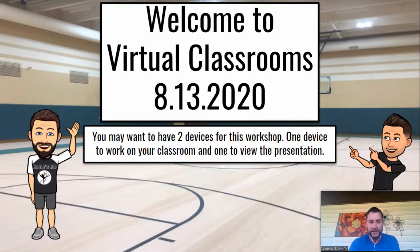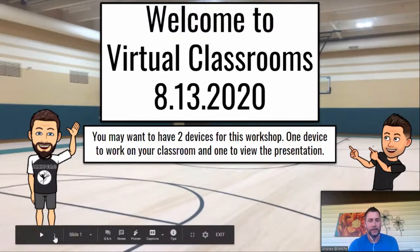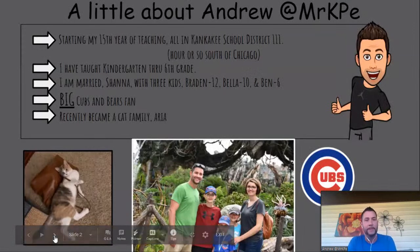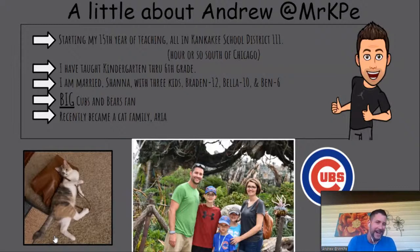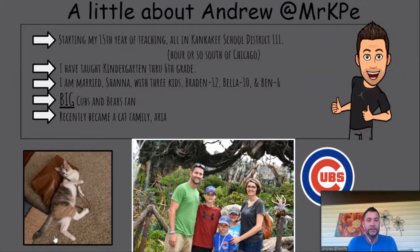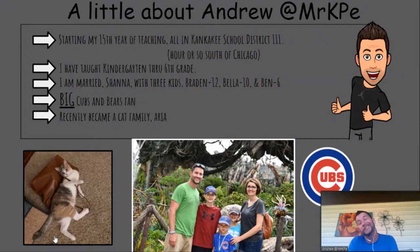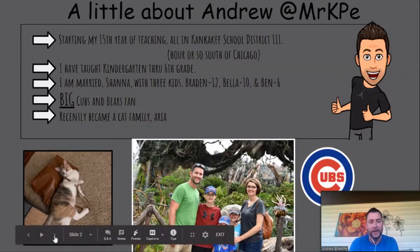So what we want to do first is a little get-to-know-you. A little about me: I'm starting my fifth year of teaching, all in the Campus Community District 111, about an hour south of Chicago, right on Route 57. I've taught kindergarten and sixth grade. I'm married to Shauna with three kids — Brady's 12, Bella's 10, Ben is six. I'm a huge Cubs fan, a Bears fan too, and we recently became a cat family — her name is Arya. I'm going to turn it over to Nick.